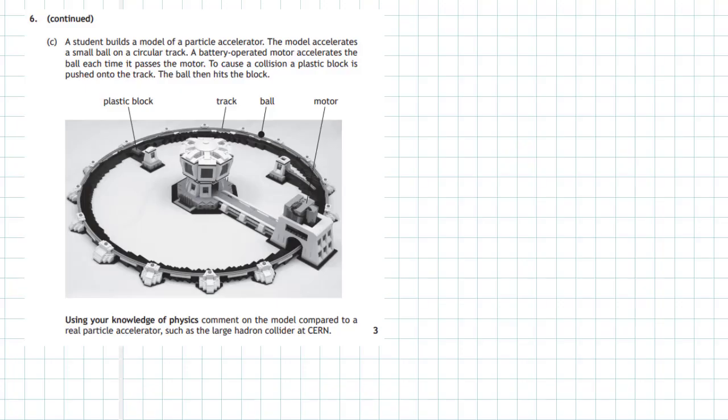Question 6c from the 2018 higher physics examination section 2. A student builds a model of a particle accelerator. The model accelerates a small ball on a circular track. A battery operated motor accelerates the ball each time it passes the motor. To cause a collision, a plastic block is pushed onto the track and the ball then hits the block. Now using your knowledge of physics, comment on the model compared to the real particle accelerator such as the Large Hadron Collider at CERN.